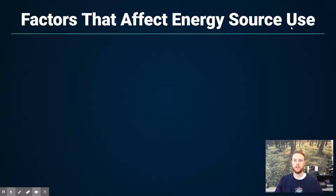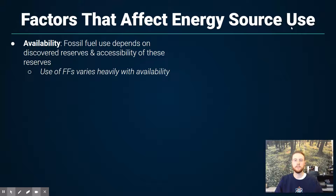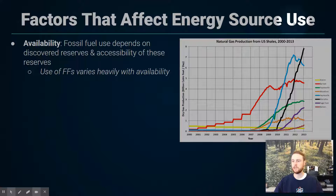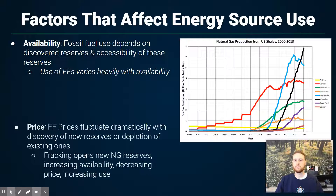We'll wrap up by discussing factors that affect energy source use. The first is availability — fossil fuel use depends heavily on discovered reserves and their accessibility. A great example is this graph showing natural gas production from U.S. shales: around 2010, fracking opened up new natural gas reserves, causing a huge increase in production. This increased availability dramatically changed pricing.